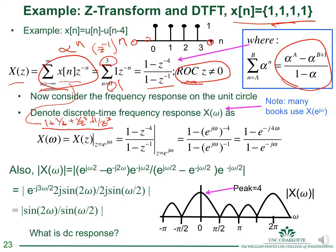To find the frequency response X(ω), we evaluate X(z) on the unit circle by replacing z with e^(jω). We split the exponent and bring a phase term to the front. Splitting the 4ω exponent yields 2j·sin(2ω), and splitting the denominator exponent yields 2j·sin(ω/2).